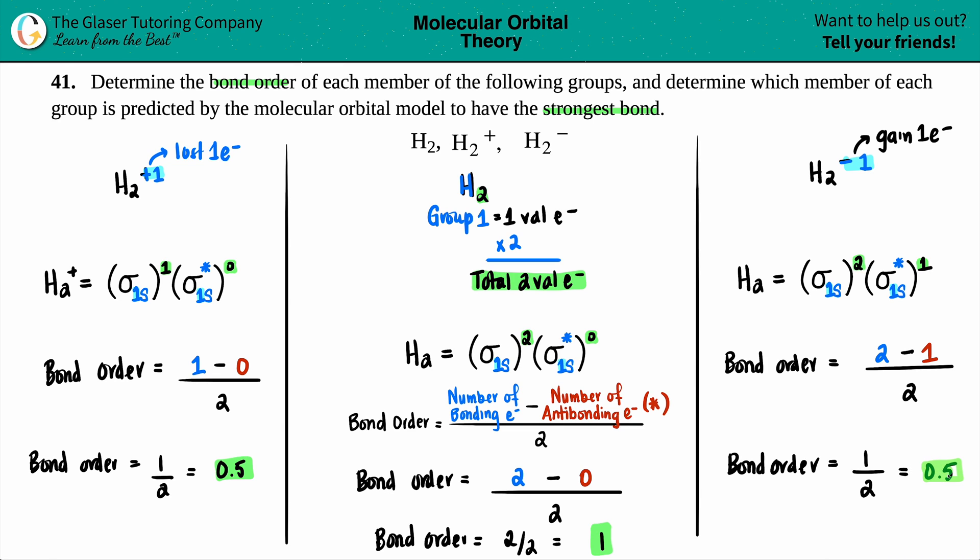And here are all of your bond orders. So you have H2 plus one having a bond order of a half. H2 has a bond order of one. And the other one has a bond order of a half. And just know that the strongest bond is always the highest bond order number. So that's the key there. So basically now you're just ranking them. So whichever one has the highest bond order, that's always going to be the strongest bond. So since one beats out halves, H2 is the strongest bond. And that is the final answer.